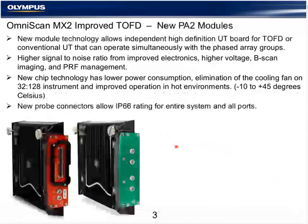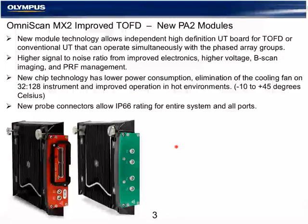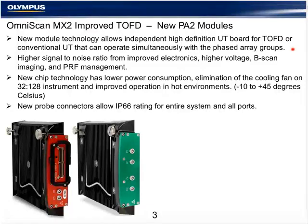The new PA2 modules recently released from Olympus have an independent high-definition UT board for conventional UT TOFD that can operate simultaneously with the phased array groups. Previous versions only allowed acquisition from either the phased array or the conventional BNC connectors. Now these two technologies can run simultaneously, with a high-voltage, independent, high-definition board optimized for TOFD or conventional UT.